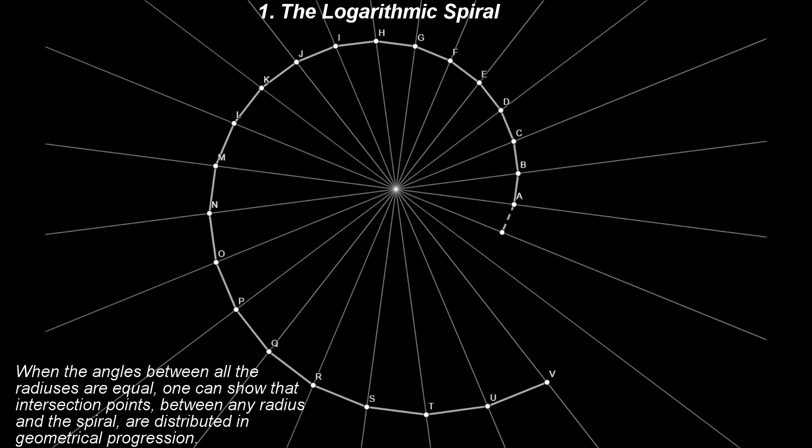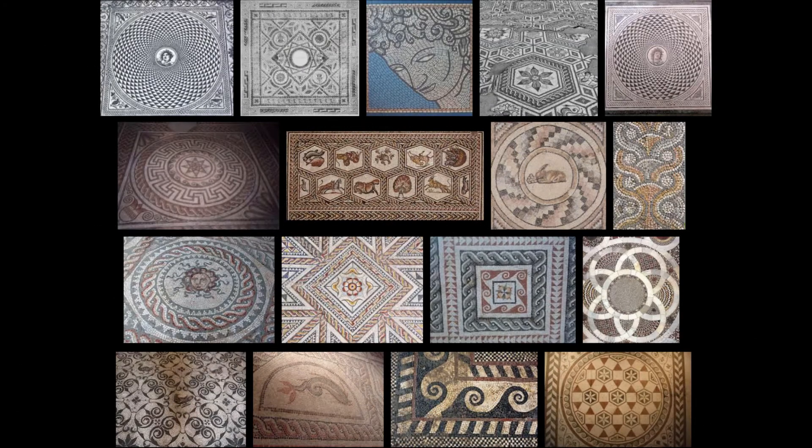When the angles between all the radiuses are equal, one can show that intersection points between any radius and the spiral are distributed in geometrical progression.